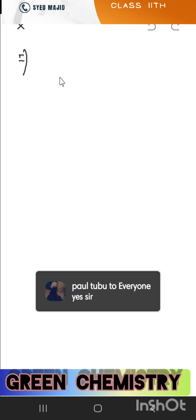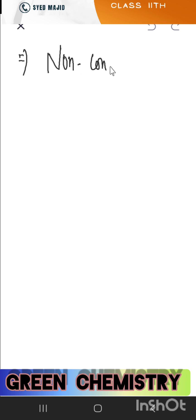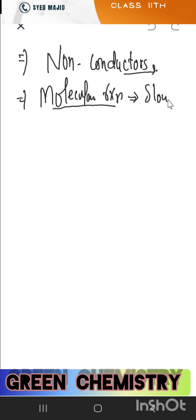Next property: conductivity. Covalent compounds are non-conductors. For conduction you need ions, but since there is no electron loss or gain in covalent bonding, no ions are formed — so covalent compounds are non-conductors. Additionally, ionic reactions are fast, but covalent compounds undergo molecular reactions, and molecular reactions are slow.